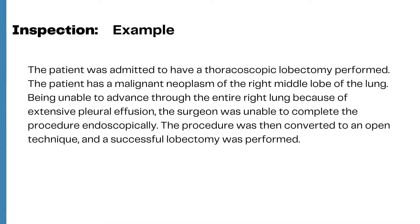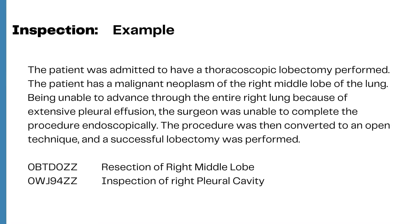Here is a coding example: A patient was admitted for a thoracoscopic procedure. The patient has a malignant neoplasm of the right middle lobe of the lung. Being unable to advance through the entire right lung due to extensive pleural effusion, the surgeon could not complete the procedure thoracoscopically, so it was converted to an open technique and a successful pleural lobectomy was performed. This scenario requires two codes: one for the resection of the right middle lobe via open approach, and one for the Inspection of the right pleural cavity since the thoracoscope was used to visualize it before conversion.